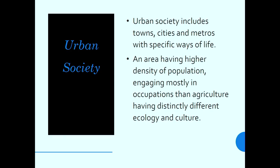Let us discuss what urban society is — what it means, its characteristics, and the problems and issues found in it. Urban society includes towns, cities, and metros with specific ways of life. Urban areas are areas having higher density population, engaging mostly in occupations other than agriculture, and having distinctly different ecology and culture.